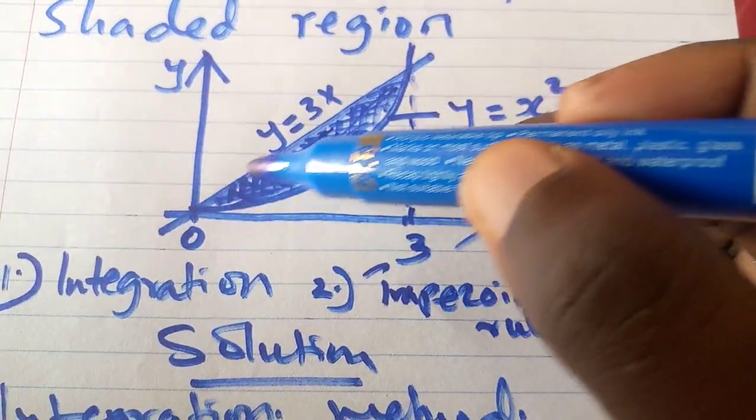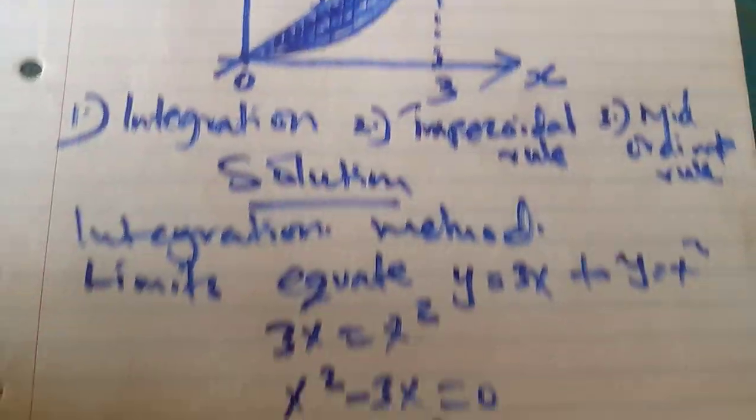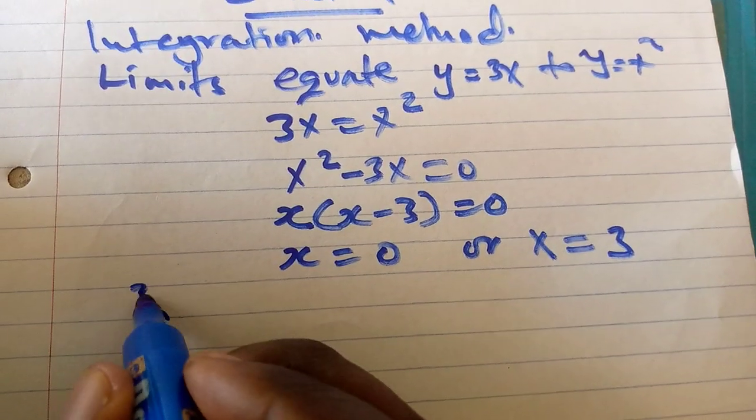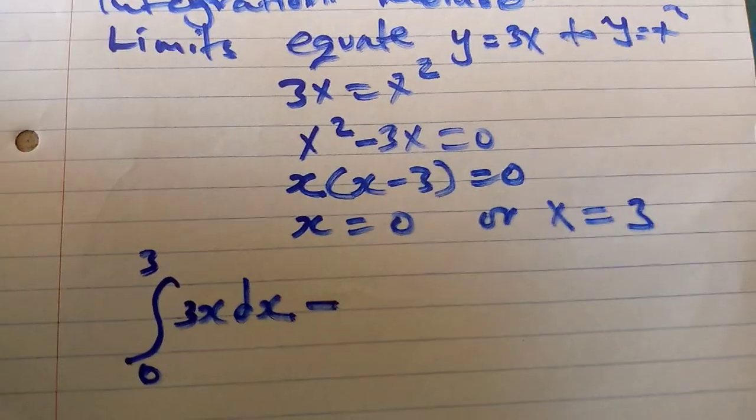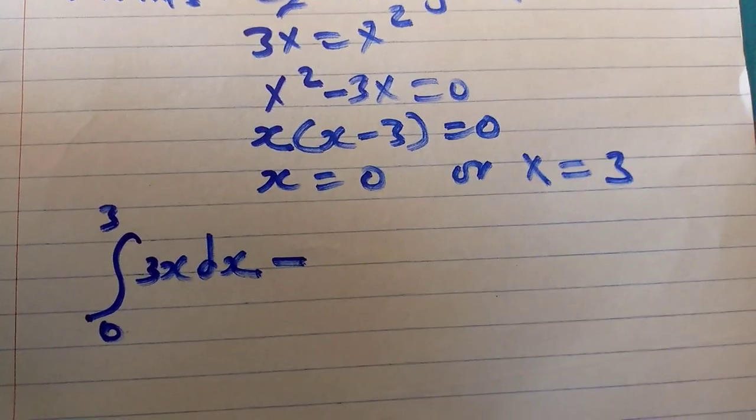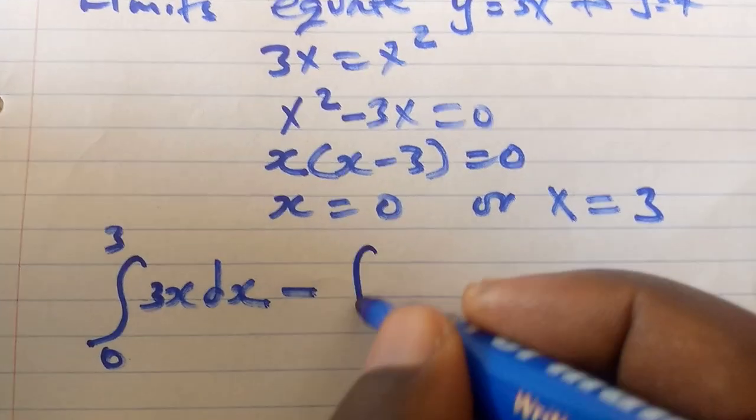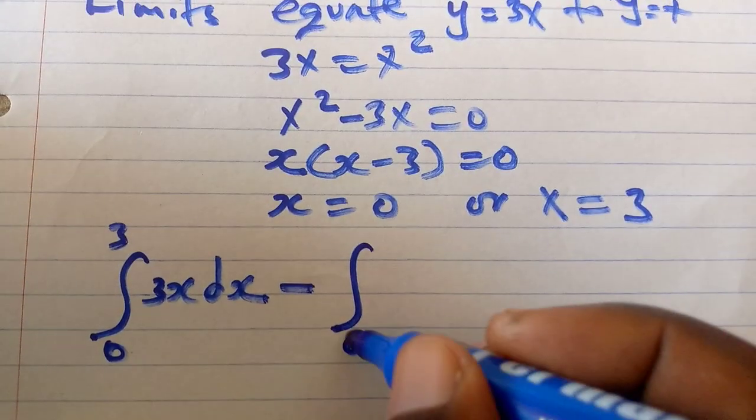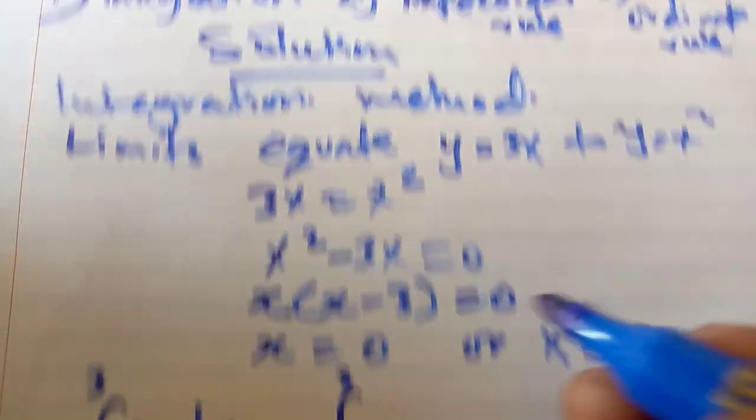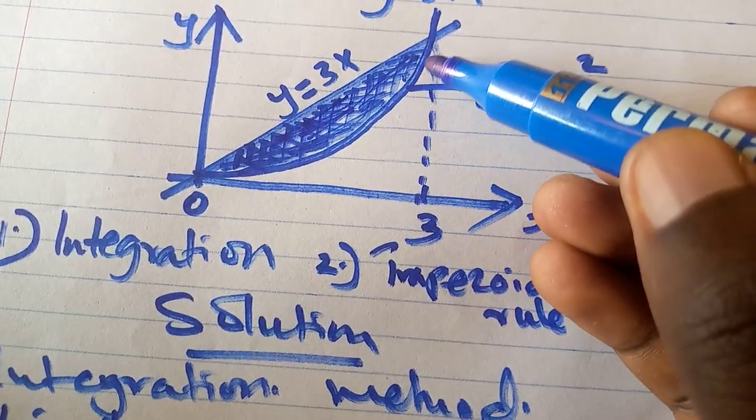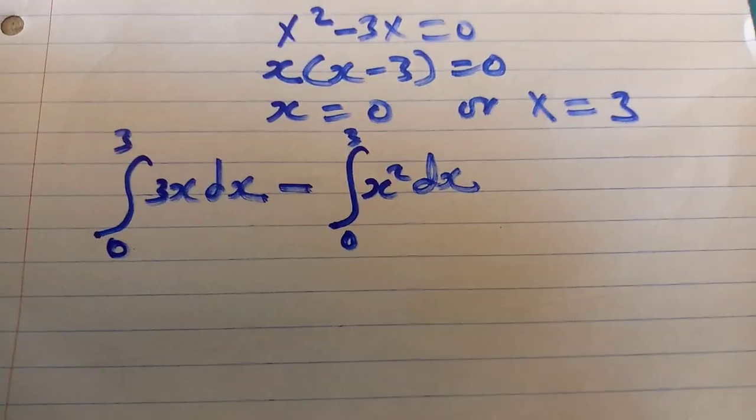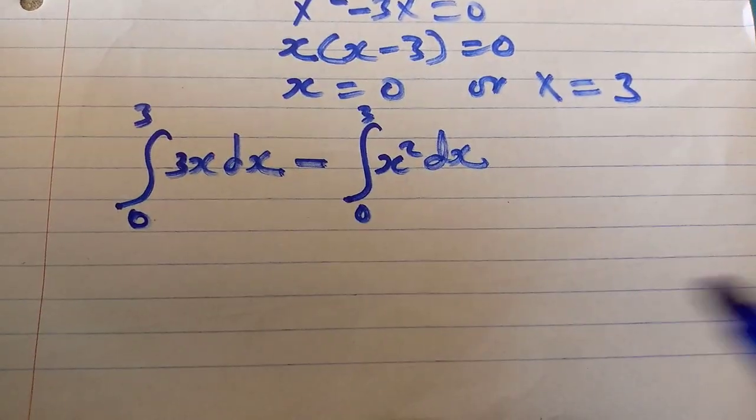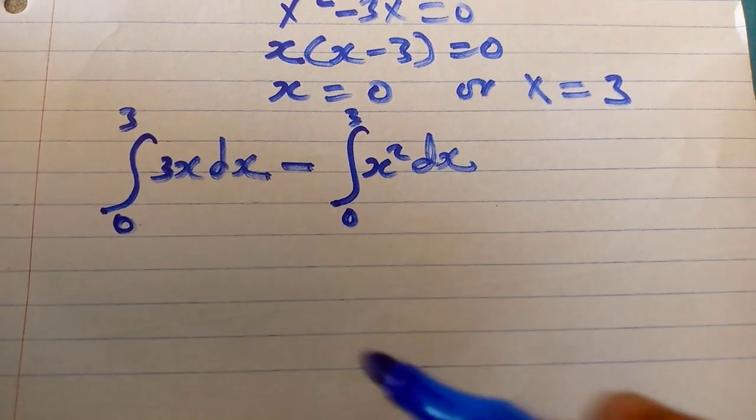So using the integration method, I would integrate this curve y-axis from 0 to 3 with respect to x. Because always integration gives us area under the curve, I'll subtract also the limit from 0 to 3 of this other curve with respect to x.